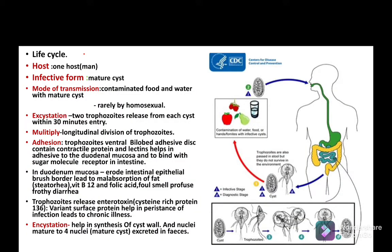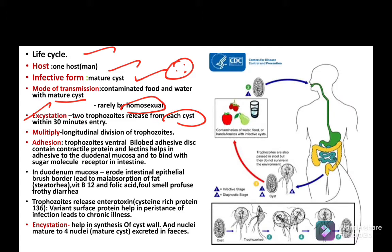In the life cycle of Giardia lamblia, the host is man only. The infective form is the mature cyst, which is a quadrinucleated cyst. The mode of transmission is contaminated food and water with the mature cyst, and rarely by homosexual contact. Excystation happens in the duodenum and upper part of the jejunum, where each cyst releases two trophozoites within 30 minutes of entry.